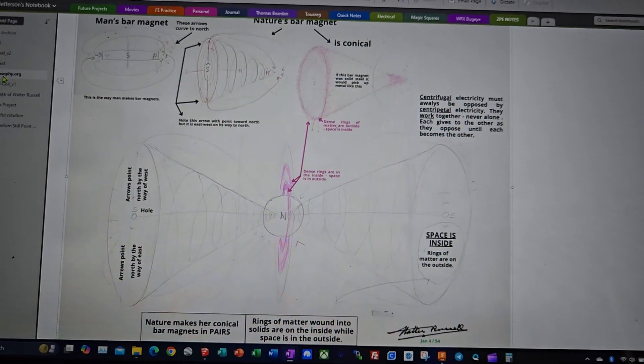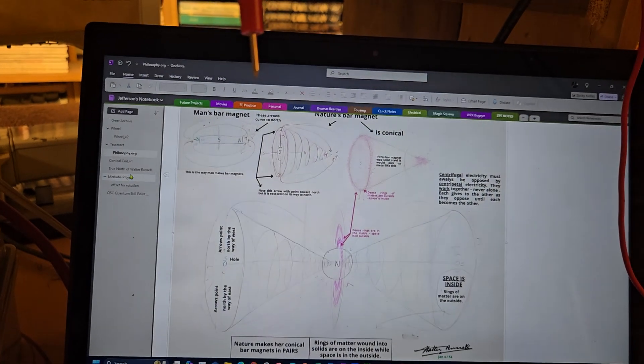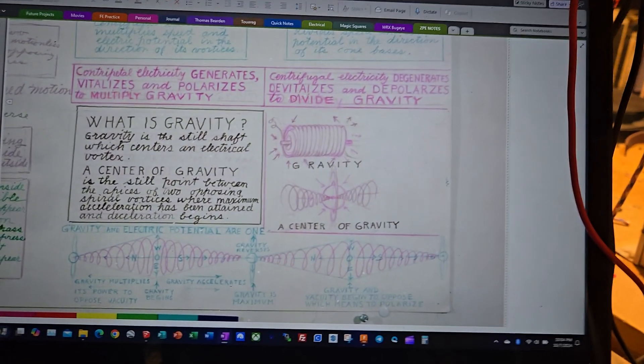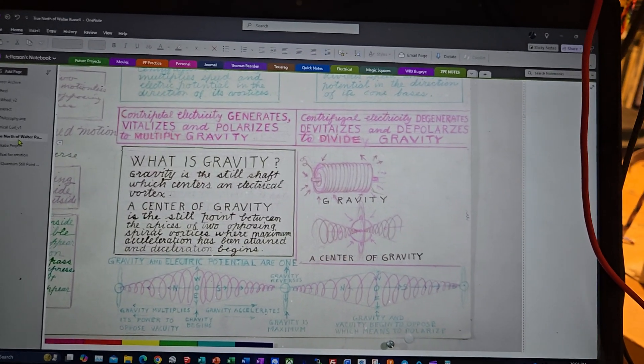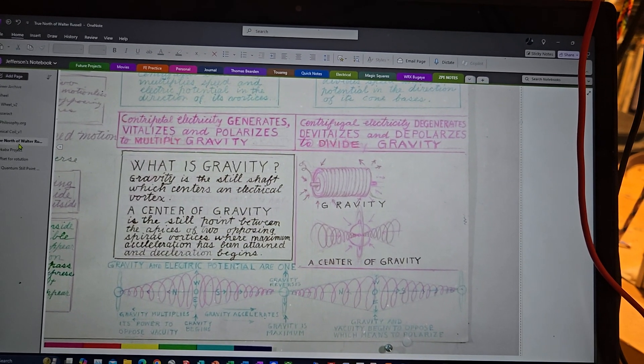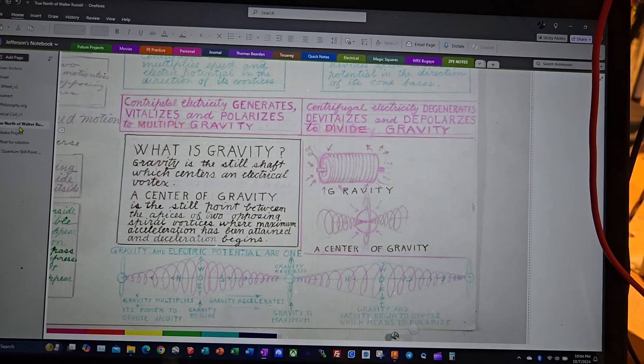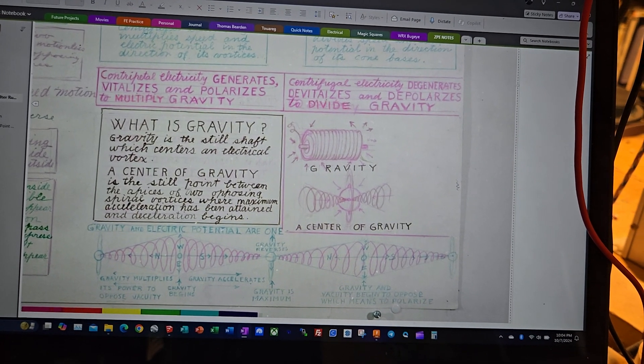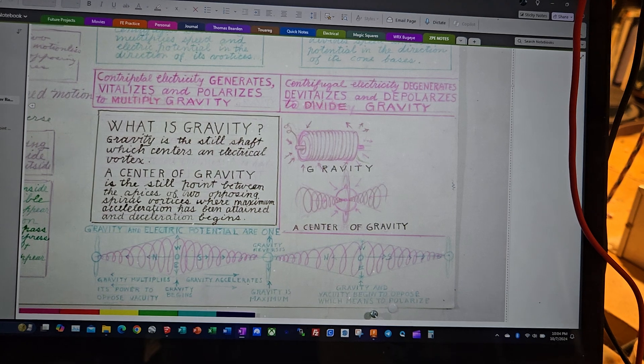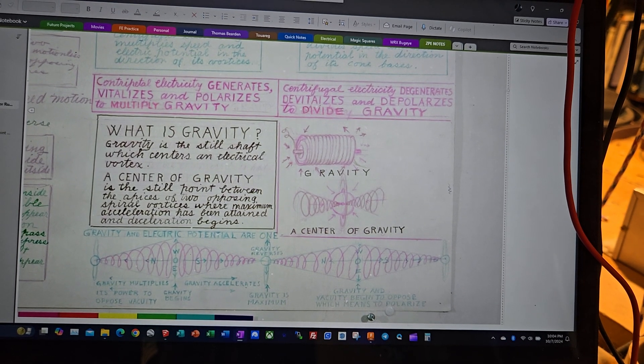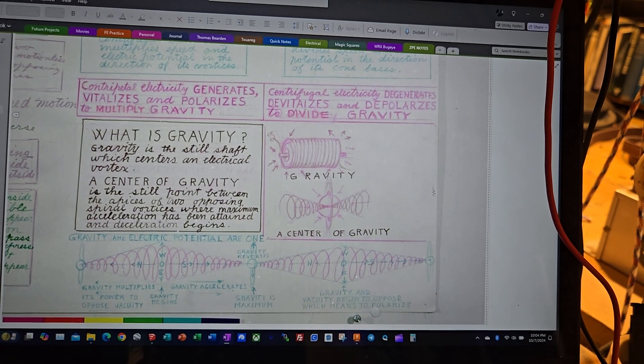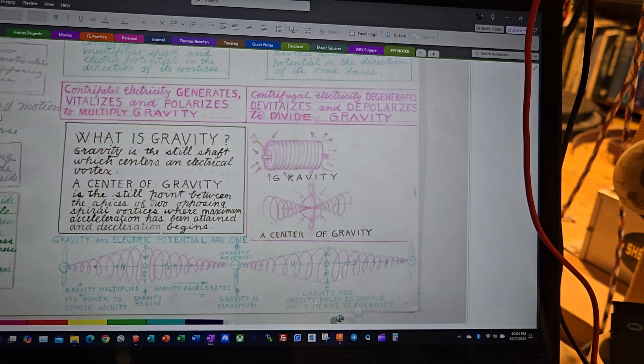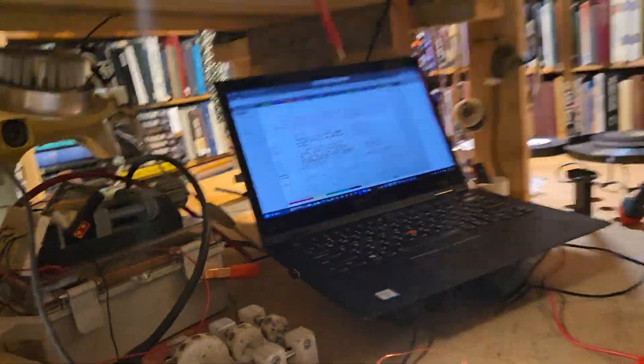Another view of this is some of his other concepts like the center of gravity. What is gravity? Gravity is the still shaft which centers an electrical vortex. A center of gravity is the still point between the apices of two opposing spiral vortices where maximum acceleration has been attained and deceleration begins.